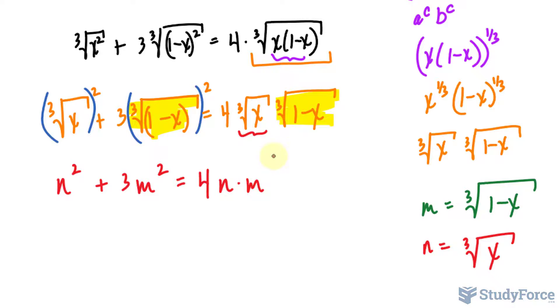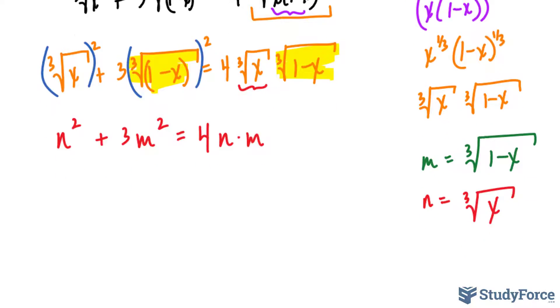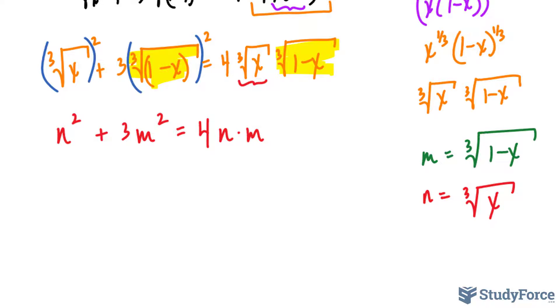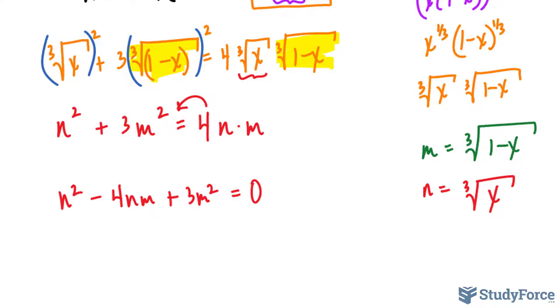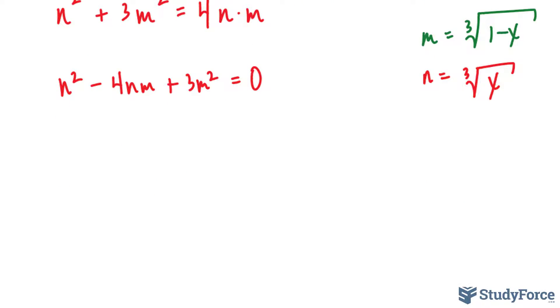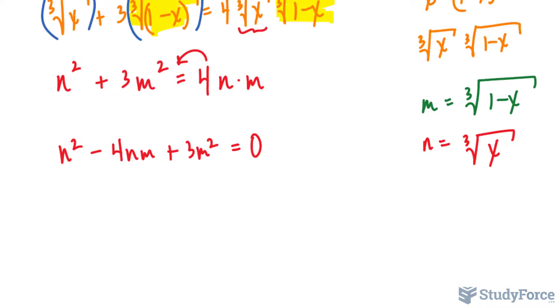What we have here looks like a trinomial which can be solved using what we know about quadratics. I'll bring that term to the left side where I have n squared minus 4nm plus 3m squared is equal to 0. So that algebraic substitution really allowed us to see this relationship clearly.